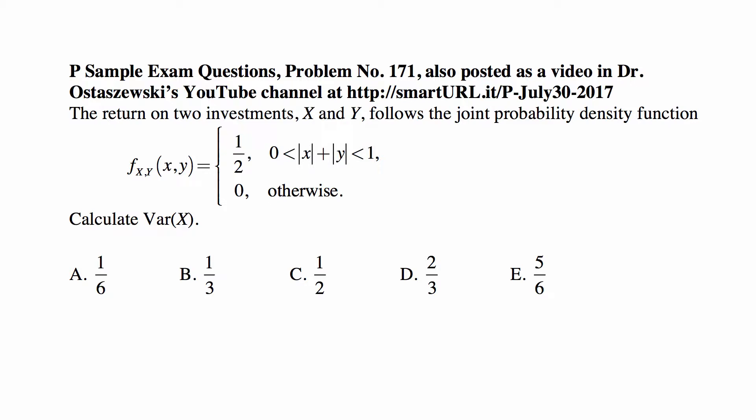Note that the condition that the absolute value of X plus the absolute value of Y is greater than zero is spurious, because whatever X and Y are, if they're not both zero, then this is positive. With the exception of the single point X equals zero, Y equals zero, this is true for any X and Y — not just positive — because the absolute value of X is positive when X is positive or negative, and the same for Y. The second condition is that the absolute value of X plus the absolute value of Y is less than one, and that's the real condition. And zero otherwise — we're supposed to calculate the variance of X.